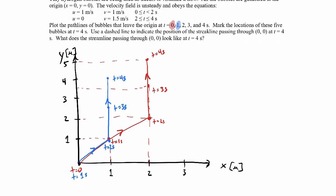Next, the bubble released at two seconds — I'll draw that one in green. That one starts at the origin at two seconds. From two to three seconds it only moves vertically, going up a distance of 1.5, so it's at y=1.5 at three seconds. Then from three to four seconds, it again goes vertically up another 1.5, putting it at y=3 at four seconds. So that path line is just a pure vertical line.